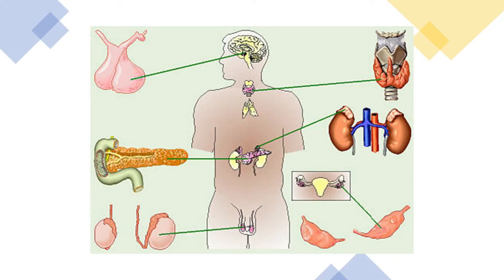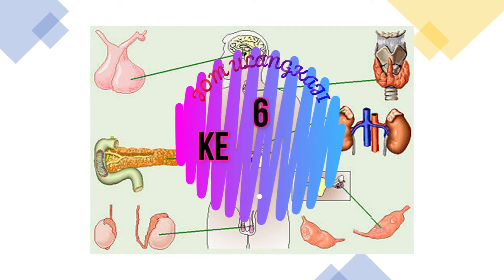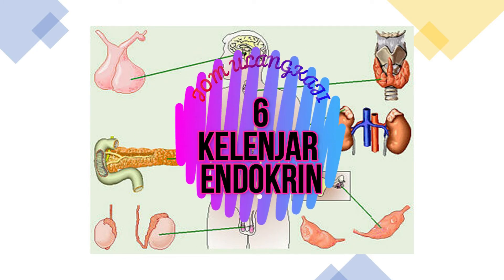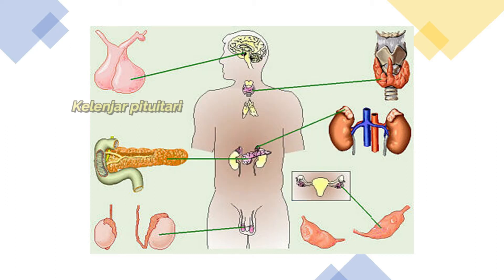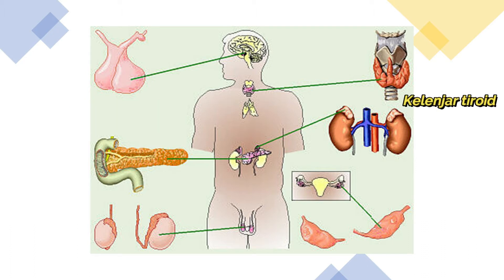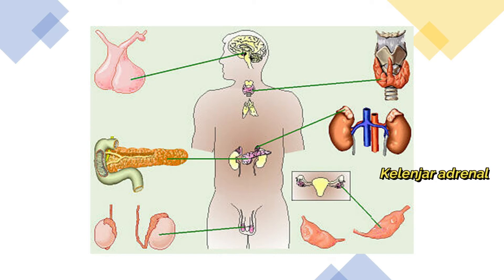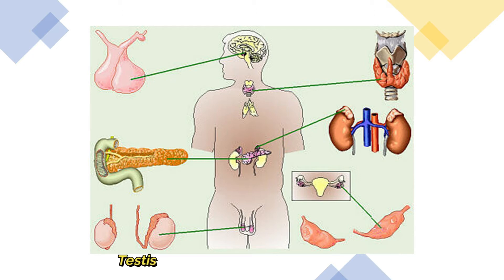Sebelum itu, kita ulang kaji dahulu. Kita ada 6 Kelenjar Endokrin. Yang pertama adalah Kelenjar Pituitary. Yang kedua adalah Kelenjar Thyroid. Yang ketiga, Pancreas. Keempat, Kelenjar Adrenal. Yang kelima adalah Ovary. Dan yang keenam adalah Testis.